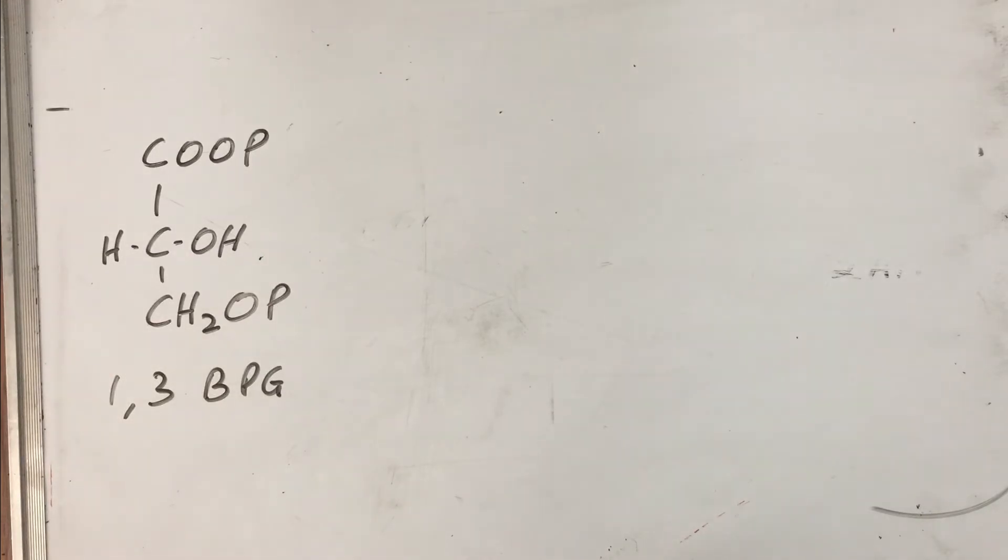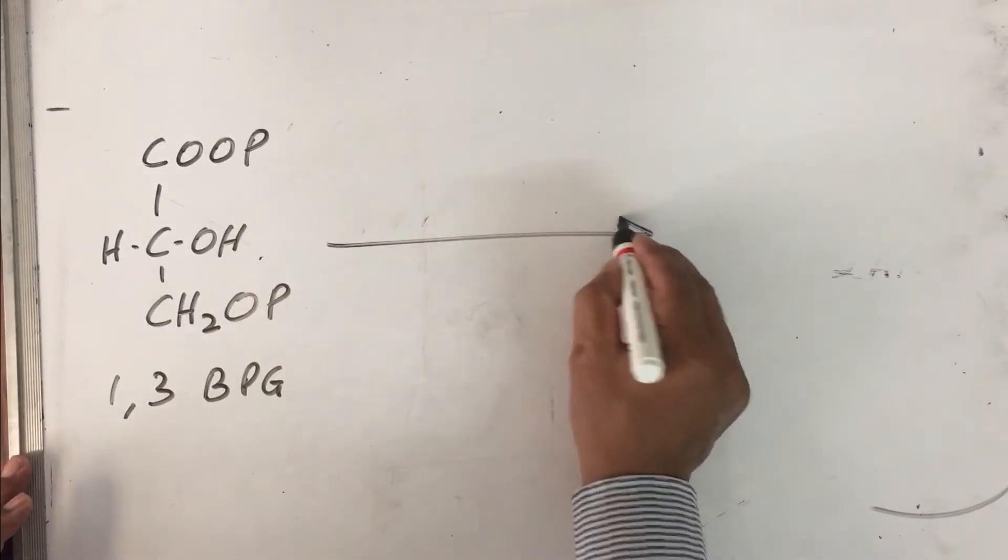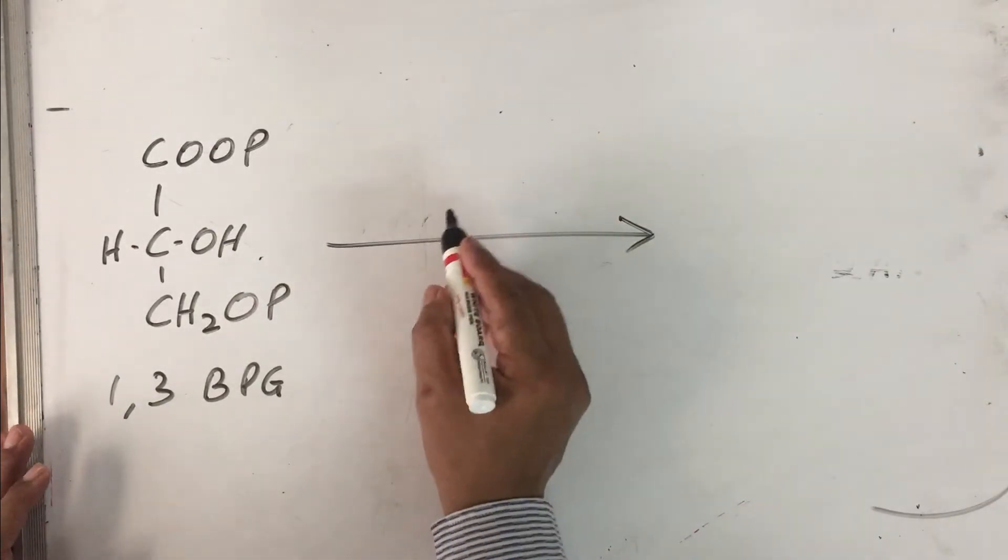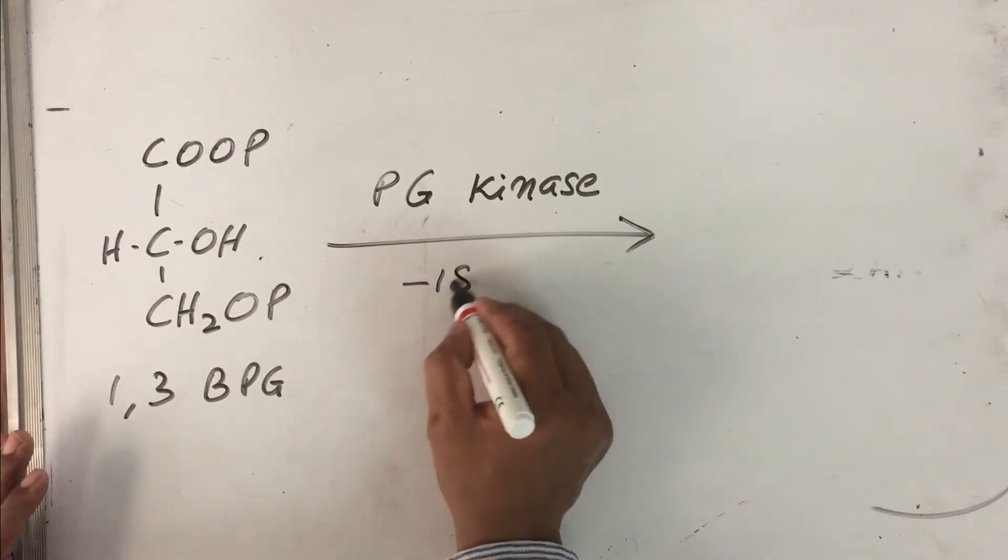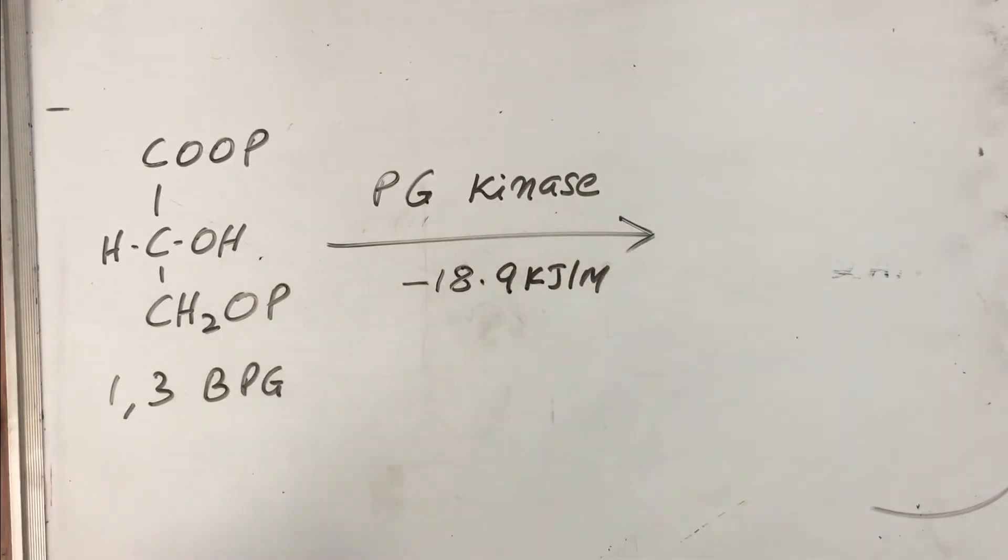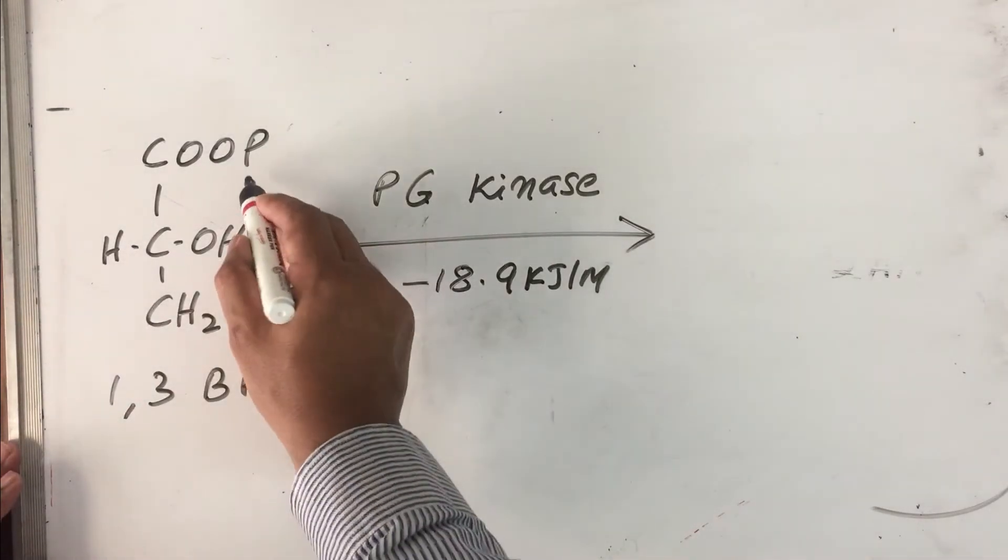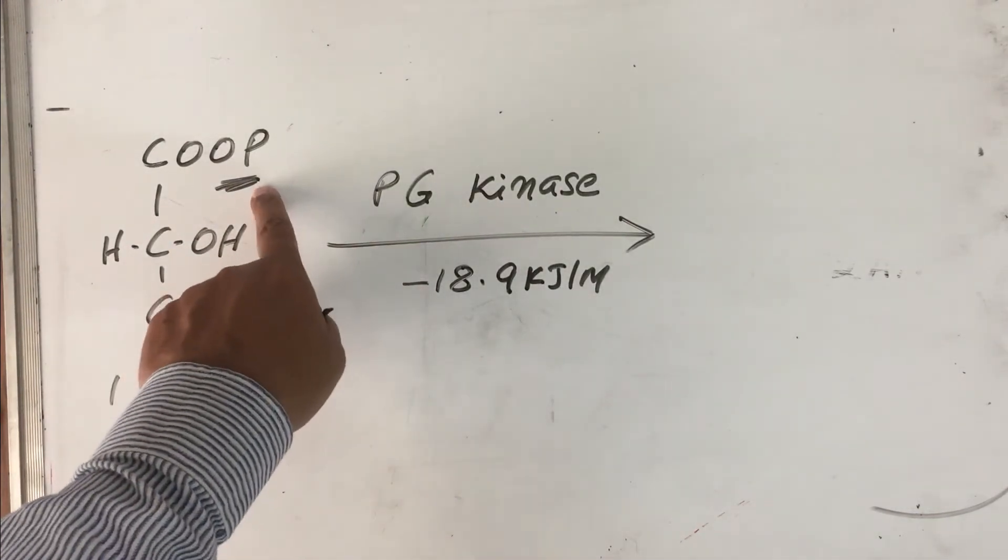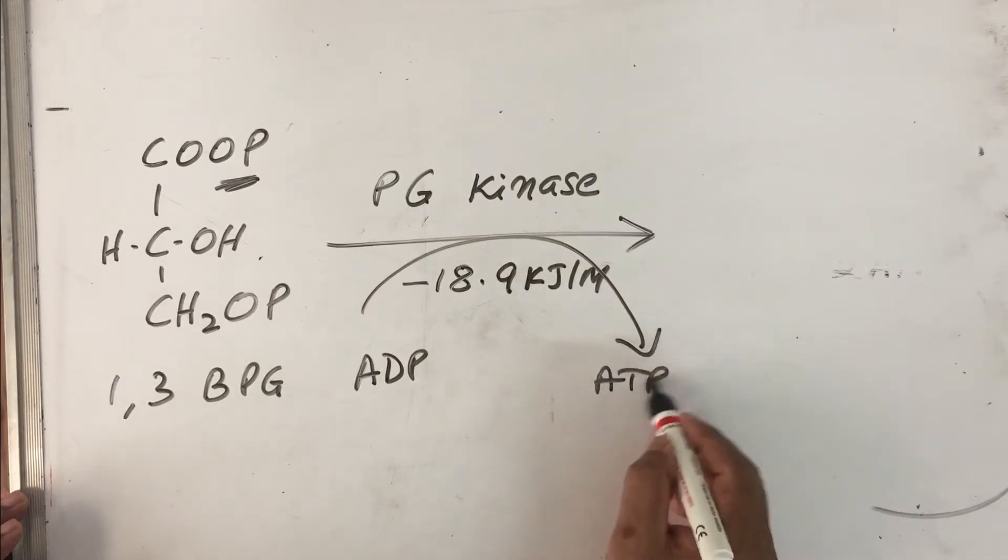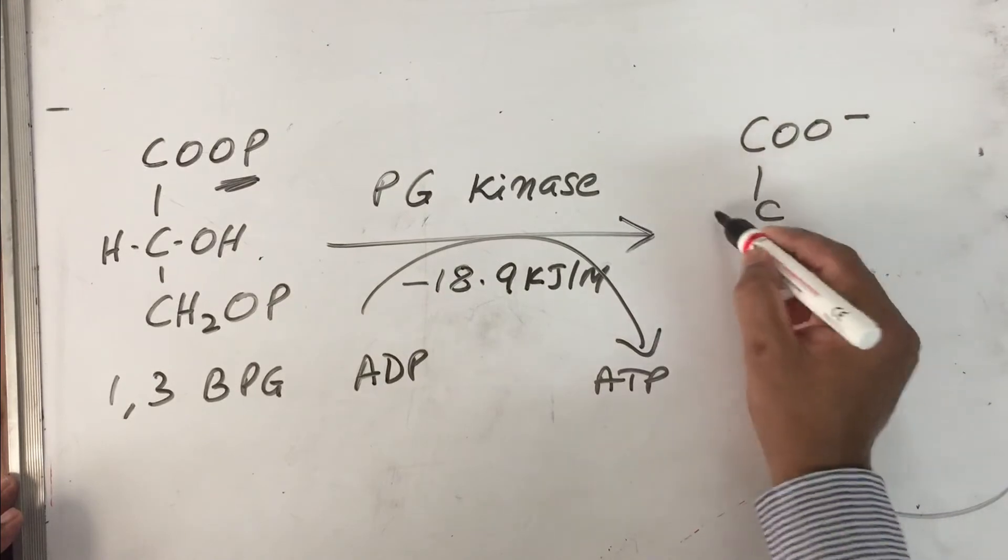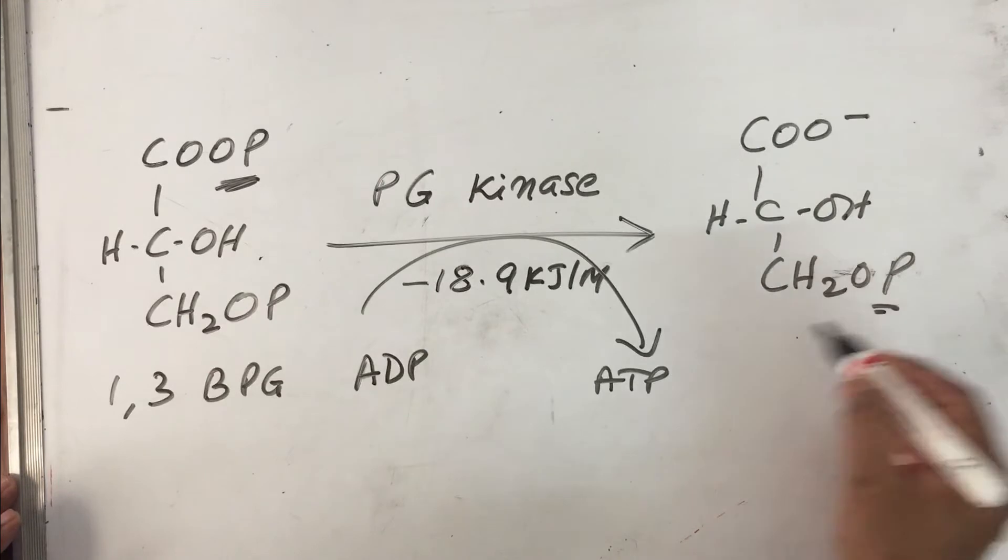The seventh step of glycolysis is very important for us. So far we have been trying to make an energy rich molecule, 1,3-bisphosphoglycerate. In the seventh step, 1,3-bisphosphoglycerate is acted upon by phosphoglycerate kinase with a negative delta G of minus 18.9 kilojoules per mole. This kinase enzyme will trap or transfer the energy present in this COOP bond to an ADP molecule, which gets converted to ATP.